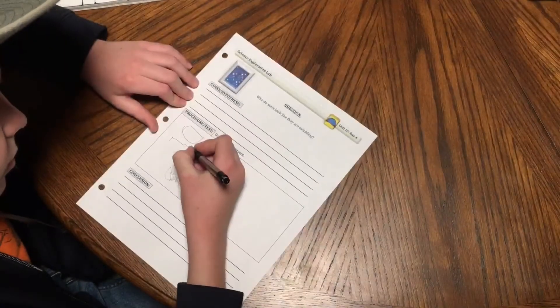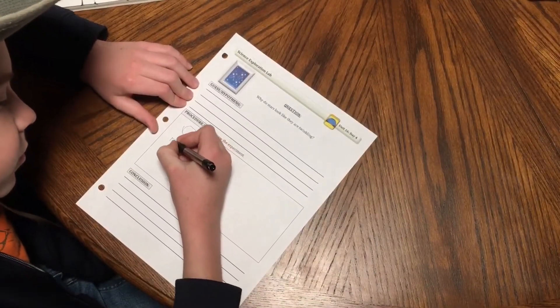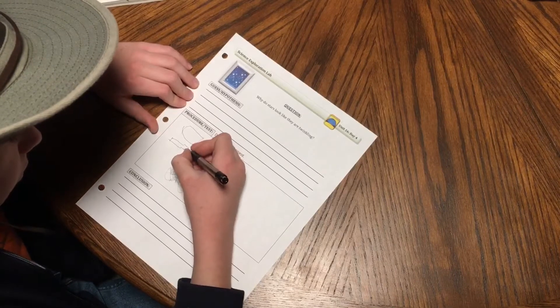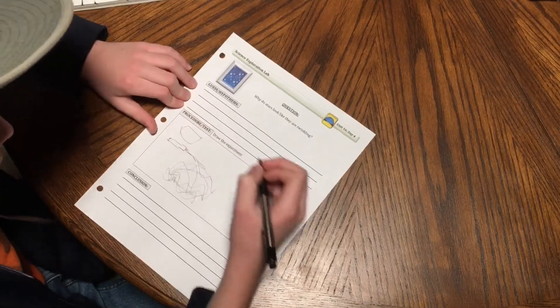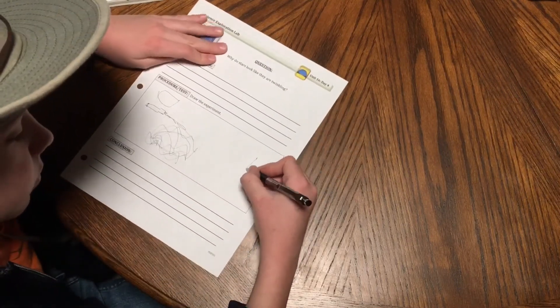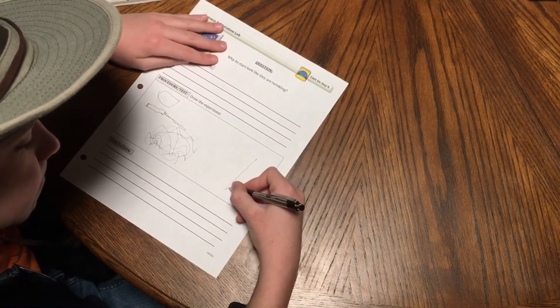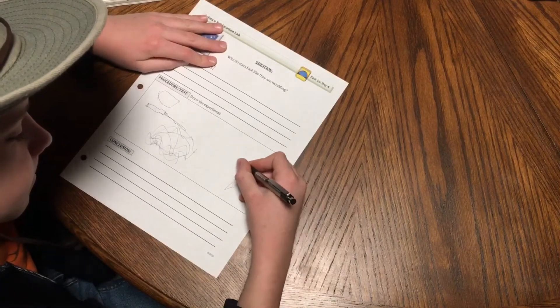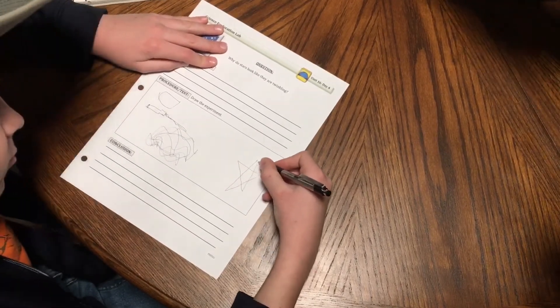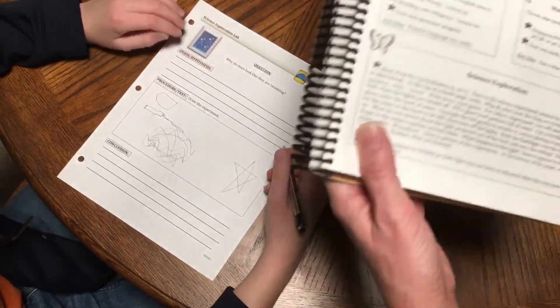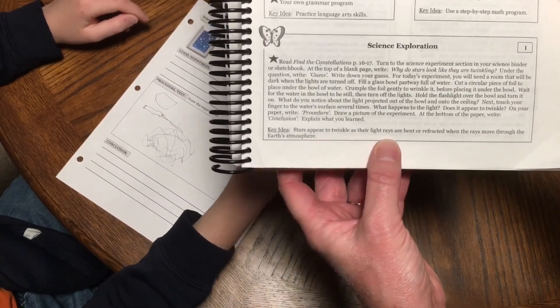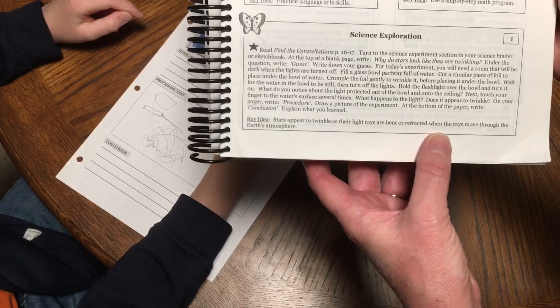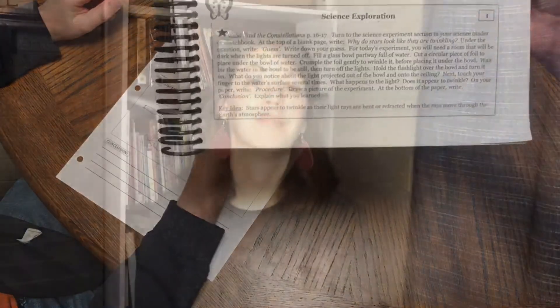We forgot to do the guess and the hypothesis, but that is okay. He's still going to draw what he did, draw a picture of the experiment and the results, and then he will write out the conclusion, which I probably this time will just let him copy out of the book, which says stars appeared to twinkle as the light rays are bent or refracted when the rays move through the earth's atmosphere.